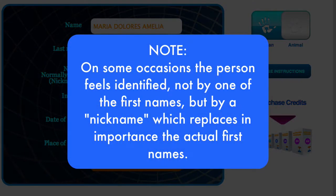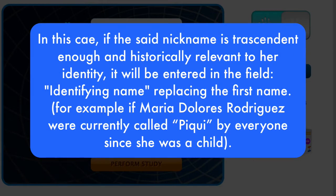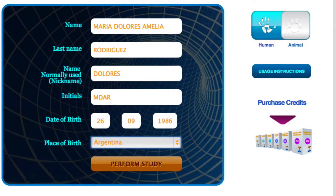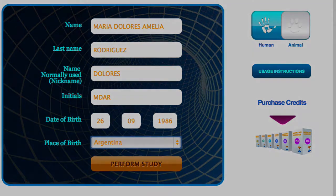Note: on some occasions the person feels identified not by one of the first names, but by a nickname which replaces in importance the actual first name. In this case, if the said nickname is transcendent enough and historically relevant to her identity, it will be entered in the field 'identifying name,' replacing the first name. For example, if Maria Dolores Amelia Rodriguez were currently called Piki by everyone since she was a child, that nickname should be used.